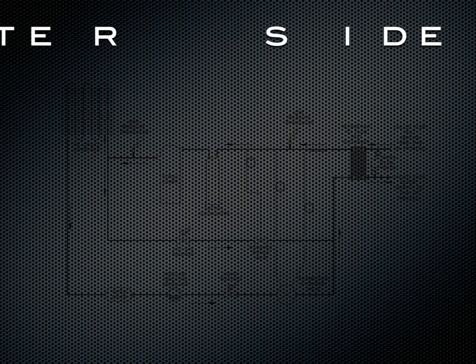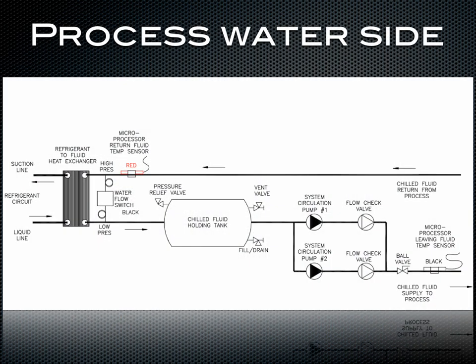Now let's go over that drawing and get a really good visual on the process water side of a chiller. A piece of equipment generates heat, and what a chiller does is remove that heat. Our piece of equipment is going to generate heat and the process fluid comes in around 55 degrees Fahrenheit to the chiller evaporator — which is this piece right here. The evaporator, sometimes called a chiller barrel, is where the process water side and the refrigerant side meet and the heat is transferred. The fluid from the process never physically touches the refrigerant fluid.